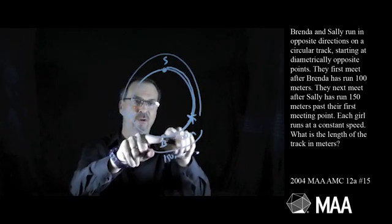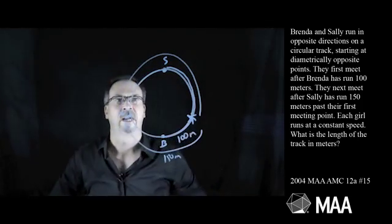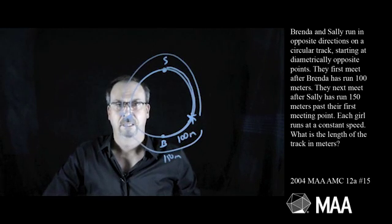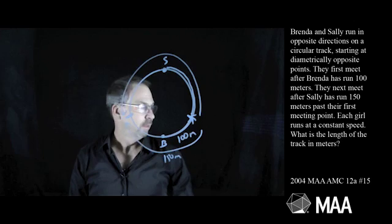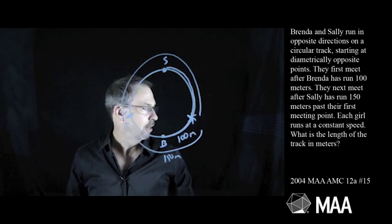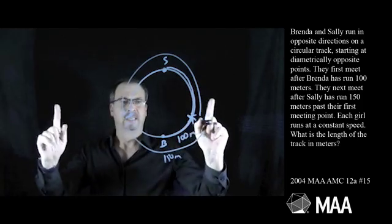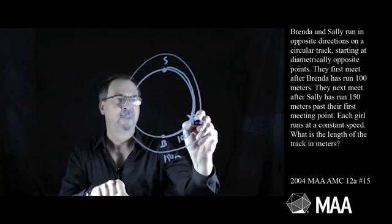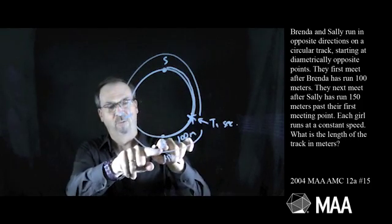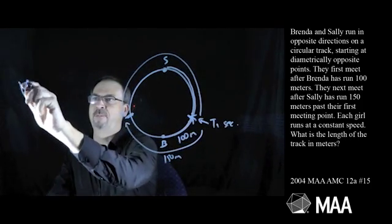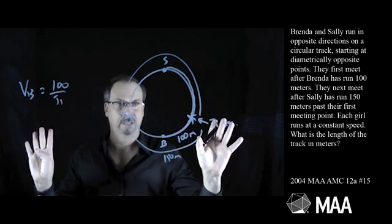That's annoying because I've got 100 metres here and sort of an overlapping 150 metres going the other way, and I want the length of the whole track. That seems hard. Well, I don't think I have enough information here — I need to know the speeds of the girls. Suppose they meet here after t1 seconds. Then I could say that Brenda ran 100 metres in t1 seconds, so Brenda's velocity is 100 metres over t1 seconds.